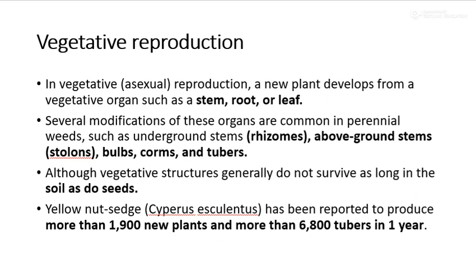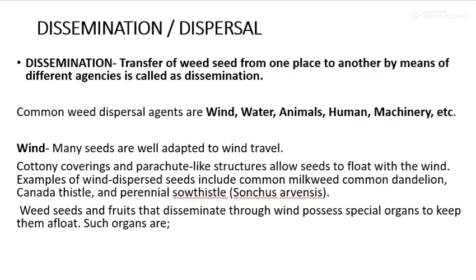The second topic is dissemination or dispersal. Dissemination means the transfer of weed seed from one place to another by means of different agencies like wind, water, animals, man, machinery, birds, etc.